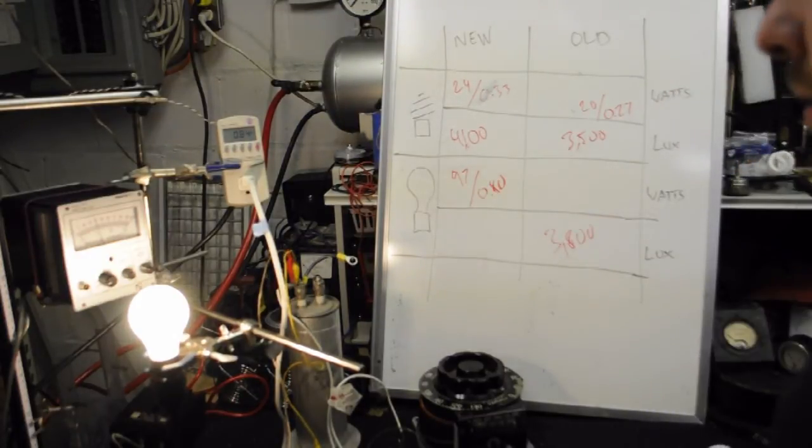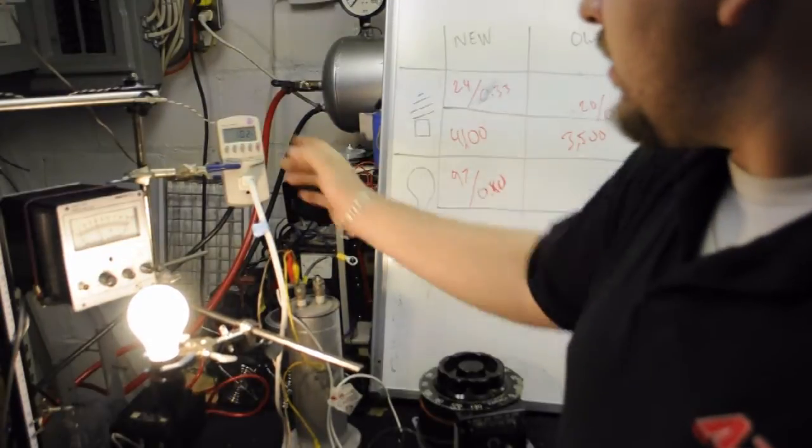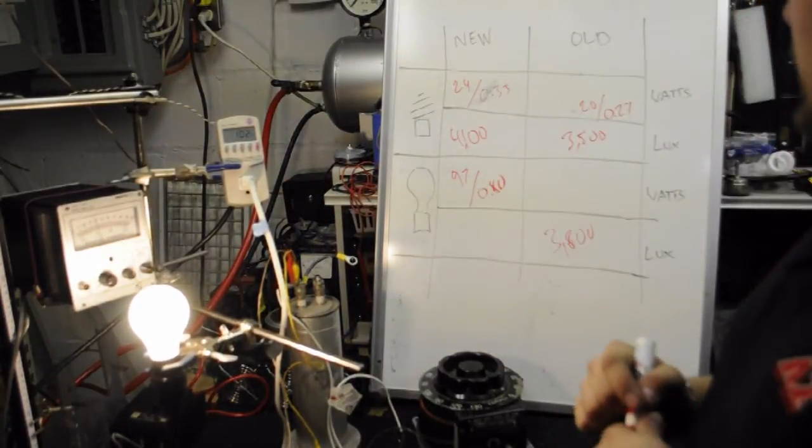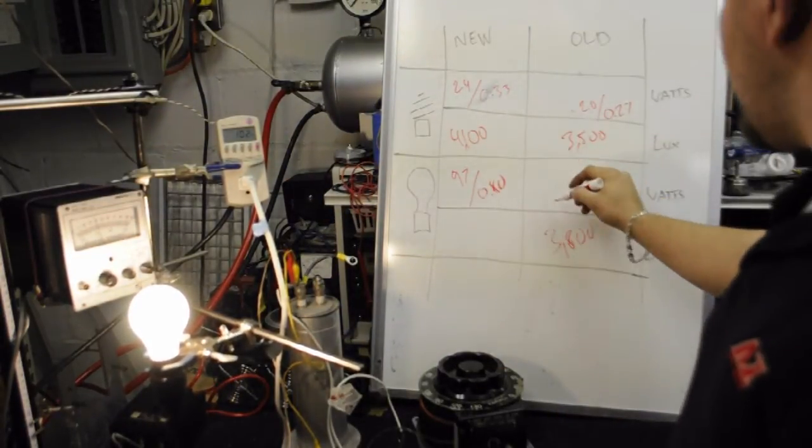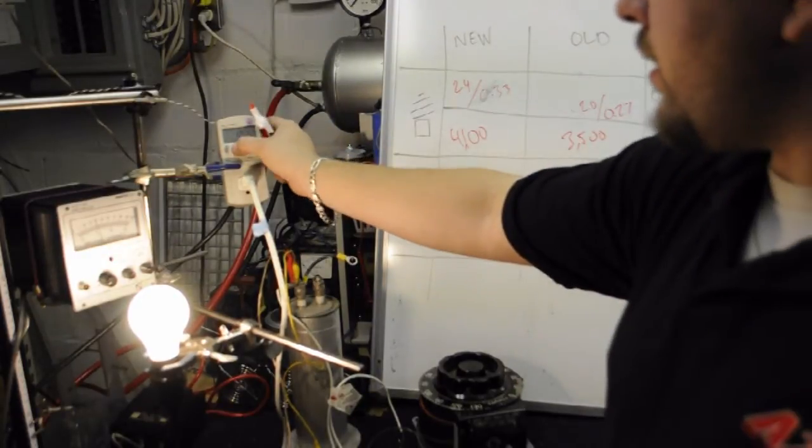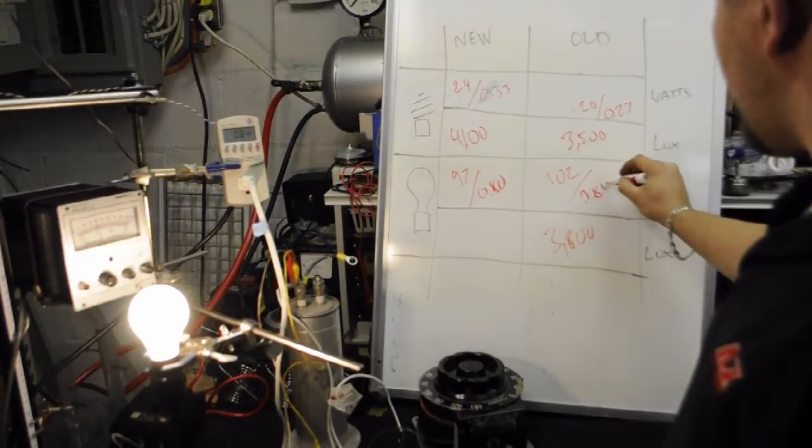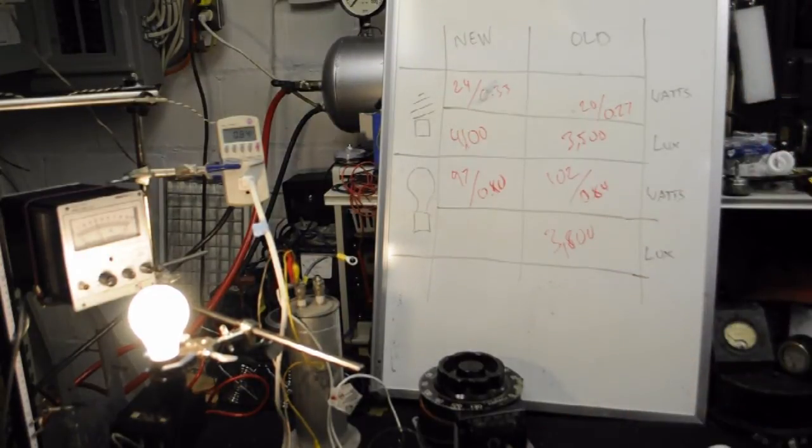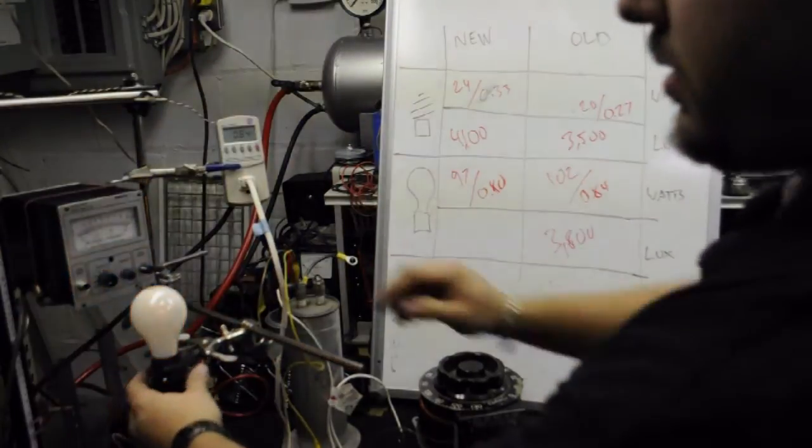So that's 3,800 lux. And looks like 102 watts. It's actually pulling more power. So it will be at 102. And current is going to be 0.84. So we go ahead and shut that off.